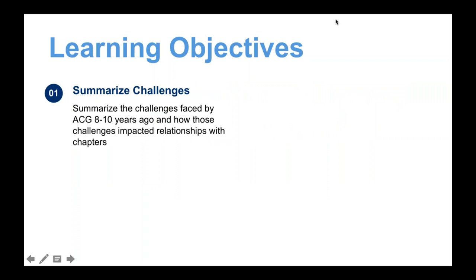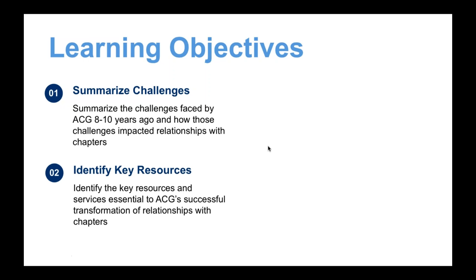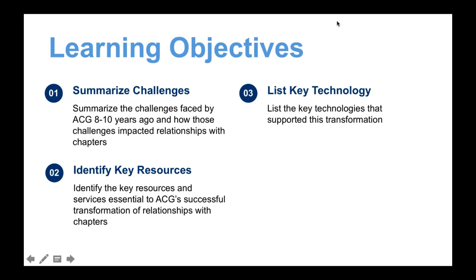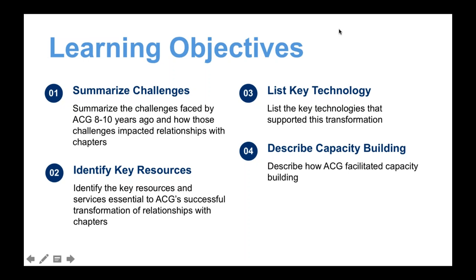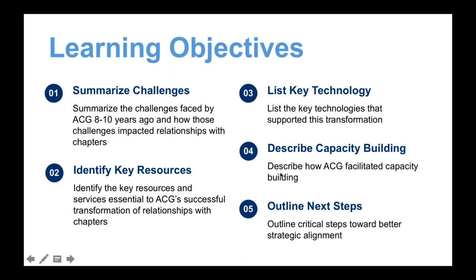Today's learning objectives are to summarize the challenges — this is not an easy topic and sometimes a heated one between the different parties you're managing. We'll identify key resources, so if you're a note taker get your pen and pencil ready, because Gary's going to share a lot of key resources they use. We'll also list key technology, describe capacity building, and outline next steps. At Bill Highway, we don't just give information — we give actionable applications.